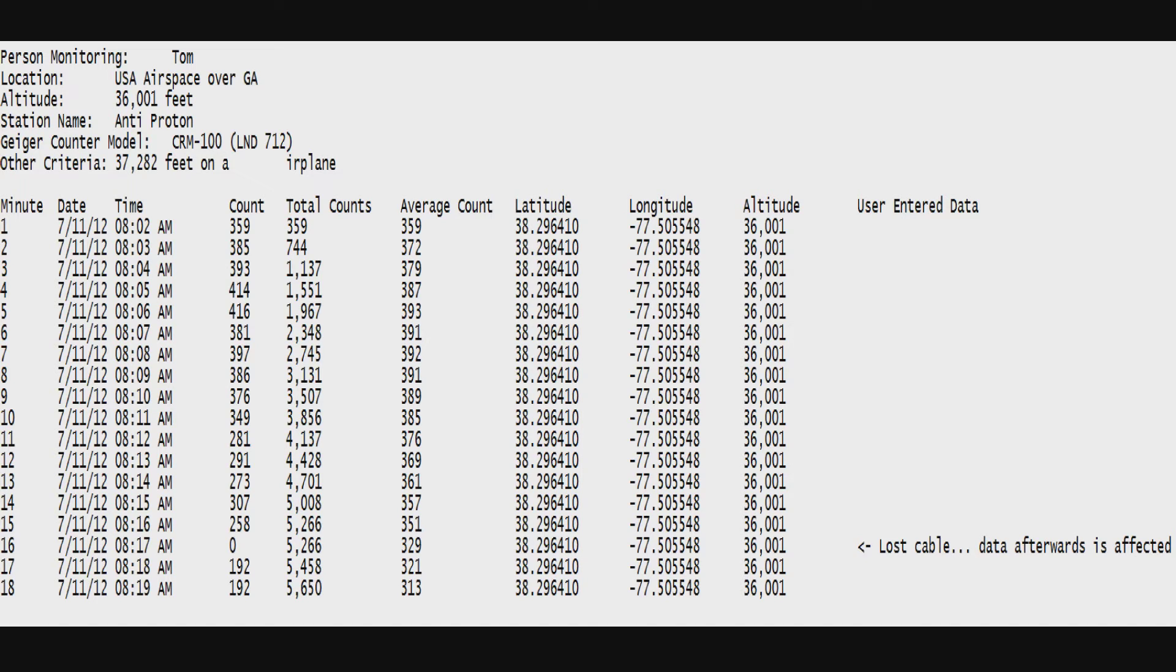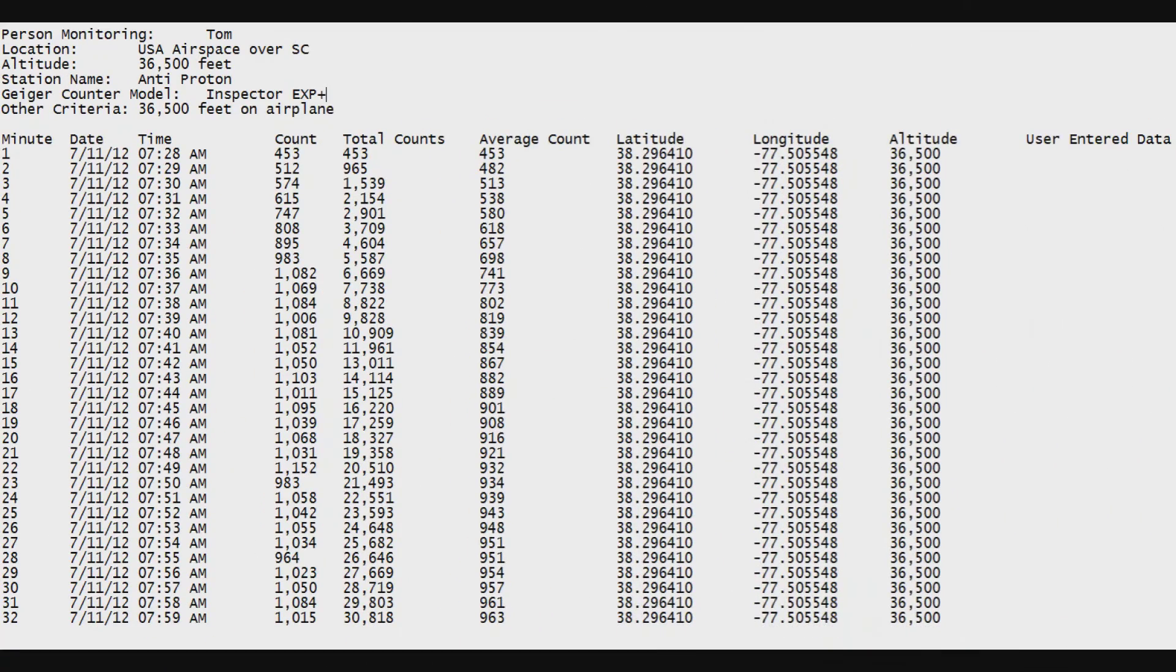Now let's look at the 7317, the pancake tube. Let's see what it did. Okay. Now as you can see, the LND 7317 pancake tube that's on my SE International Inspector EXP Plus did massively higher readings. Well, not massively, like double to nearly triple. Which isn't massive, I guess, if you really want to think about it. Besides massive isn't really a scientific word to use anyway. But whatever. So I got, in this case, 32 minutes of readings. And these were all clean readings all the way down. And as you can see, it did pretty well. The highest count that I got looks to be 1,152 counts per minute. My average at the very end was 963 counts per minute. So keep in mind, this was a higher altitude flight right here that I took. This is more indicative of what you'd get flying across the United States, for example.